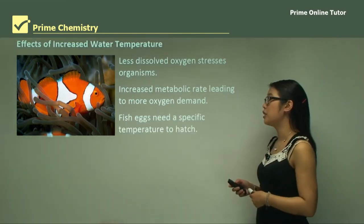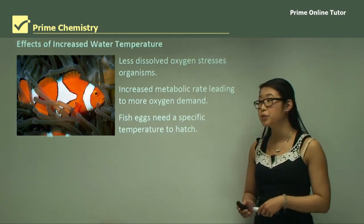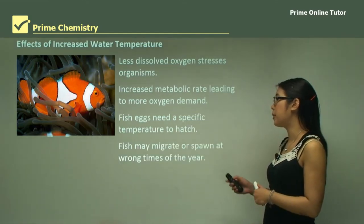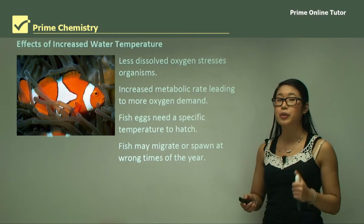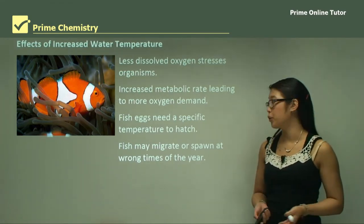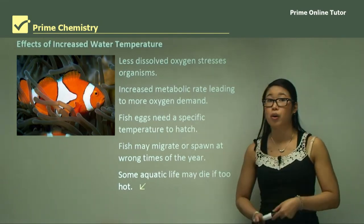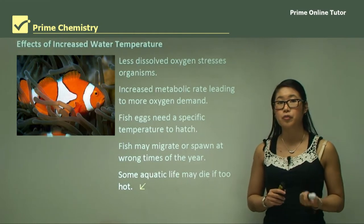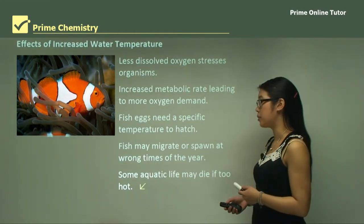Fish eggs also need a specific temperature to hatch, so if we increase the temperature with thermal pollution these eggs may not hatch. Fish may also migrate or spawn at the wrong times of the year because they base their reproduction cycle on water temperature. Some aquatic life may die if it's too hot, as they need cooler temperatures for their body to function properly.